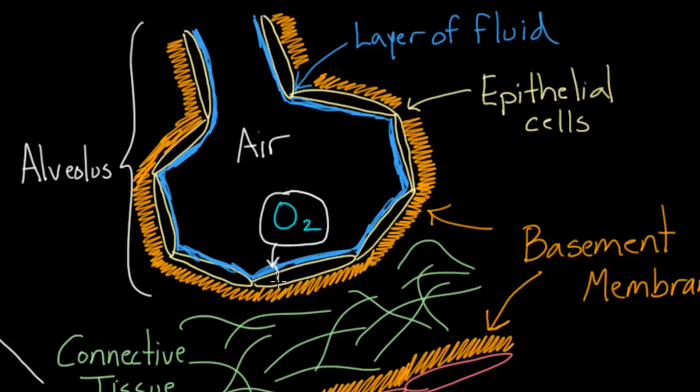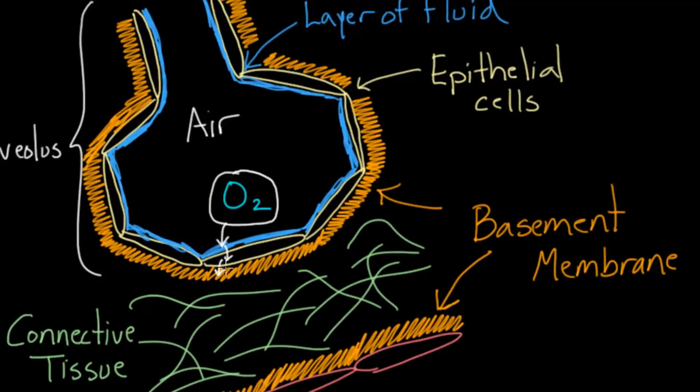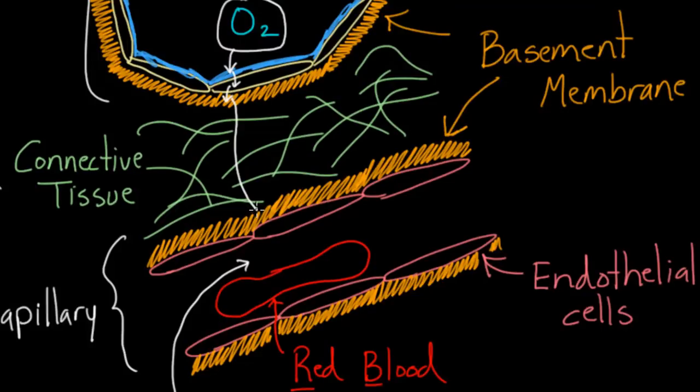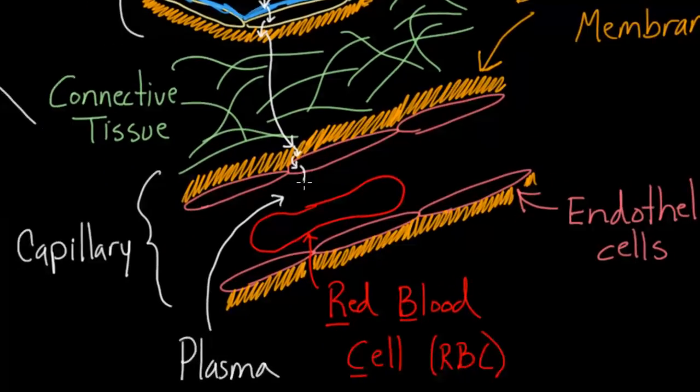Then the molecule of oxygen is going to go through the epithelial cells, the cells that make the walls of the alveolus—these flat pancake-shaped cells. It's going to go into the basement membrane, which is a foundation that offers structural support to the lungs. Below the basement membrane is a layer of connective tissue that the oxygen molecule has to get through. It enters another layer of basement membrane, then goes into the endothelial cells, which are also pancake-shaped and make the walls of the capillary.